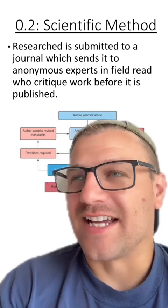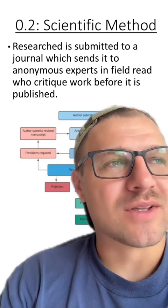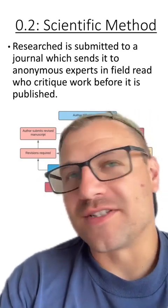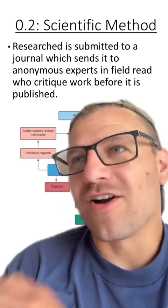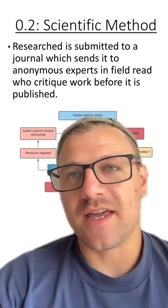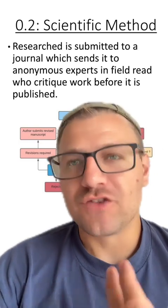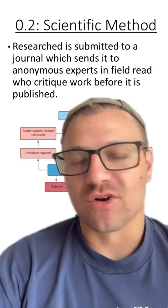This part of the scientific method is probably one of the most frustrating parts just because of how diligent scientists need to be with their procedures, their writings, and their experimentation overall. But I think arguably this is the most important part of that process. This is basically a way that science self-checks itself to make sure that bias or errors aren't introduced into our findings.